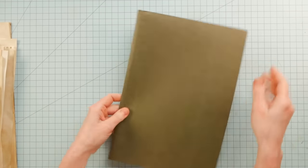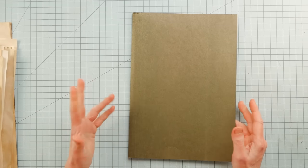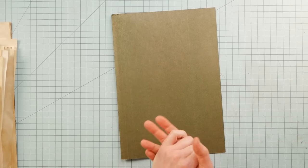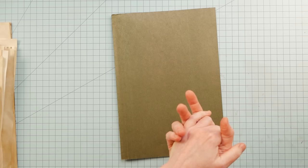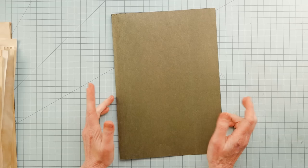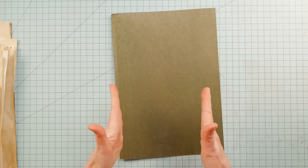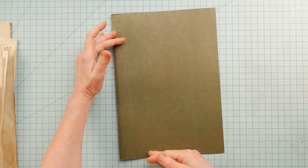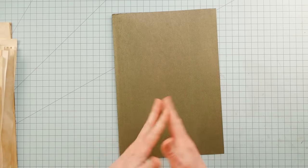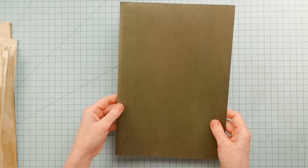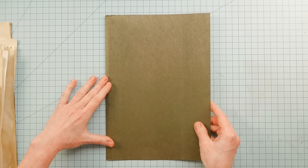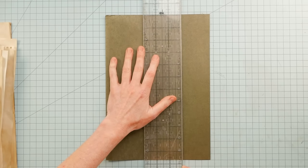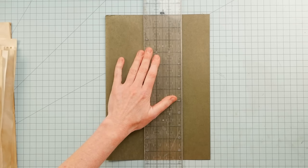So I'm going to decide on how big I want my little journal. I think I want my pages to be about as large as a standard size copy paper folded in half. For U.S. letter that is five and a half inches wide and eight and a half inches tall, but it needs to be just a little bit bigger than that so that those pages will fit inside. So I'm going to make it six by nine right now and then I can trim it down later.